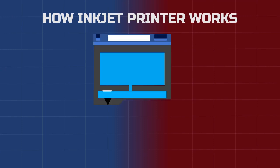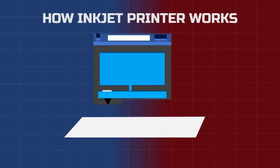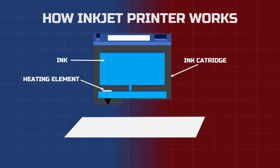Now let's see the working of an inkjet printer. What you see here is known as a cartridge, which contains the ink and a small heating element. When the heating element starts producing heat, it causes a small bubble formation inside the ink and forces it through the nozzle.